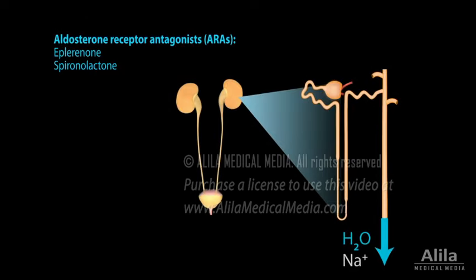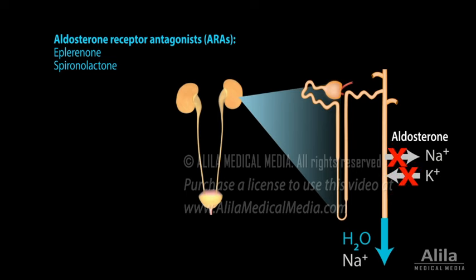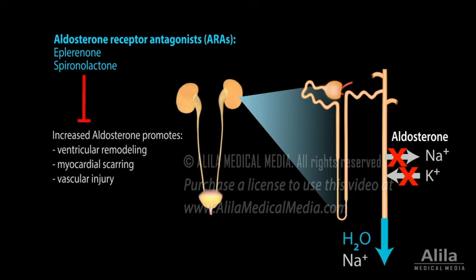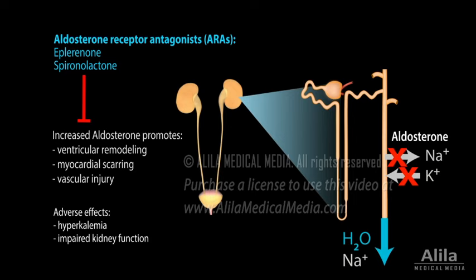Aldosterone receptor antagonists block the action of aldosterone. Because aldosterone's primary function is to promote sodium and water retention and potassium excretion, aldosterone antagonists act as potassium-sparing diuretics. However, their effect in heart failure treatment is also attributed to the inhibition of aldosterone's damaging impact on the heart and blood vessels. Major adverse effects include hyperkalemia and impaired kidney function.